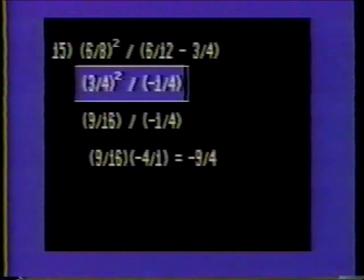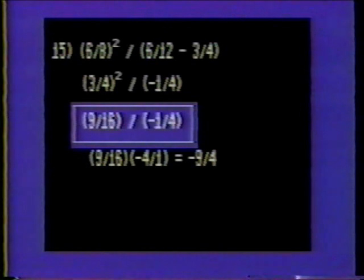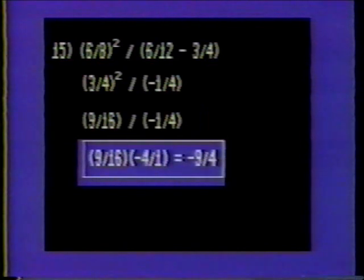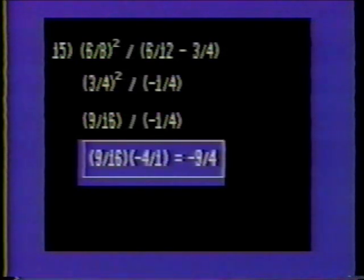Let's simplify six-eighths before we go any further. Six and eight are evenly divisible by two. Six divided by two is three, and eight divided by two is four. It now reads three-fourths squared divided by negative one-fourth. Three-fourths squared is three-fourths times three-fourths, which is nine-sixteenths. To go further, invert the denominator to obtain nine-sixteenths times negative four over one. Negative four will divide sixteen four times, making the final solution negative nine-fourths.